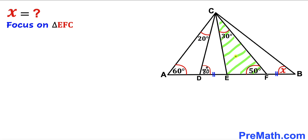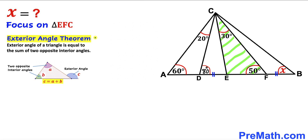Now let's focus on triangle EFC and apply the exterior angle theorem again. The exterior angle equals the sum of its two opposite interior angles: 30 degrees plus 50 degrees, which gives us 80 degrees.